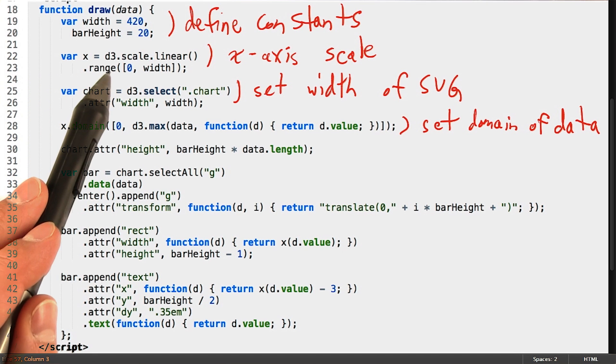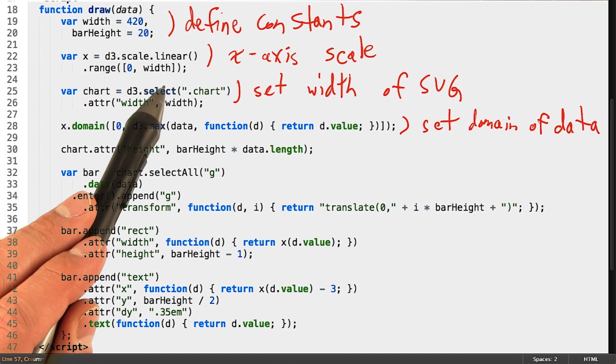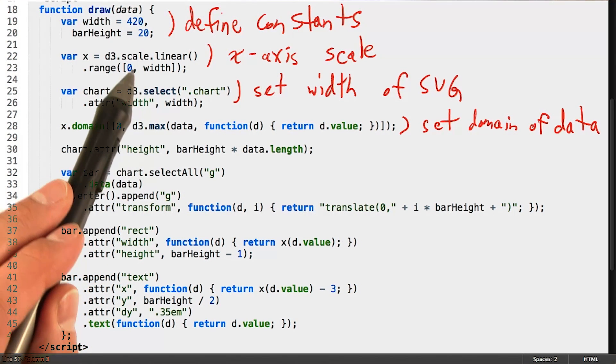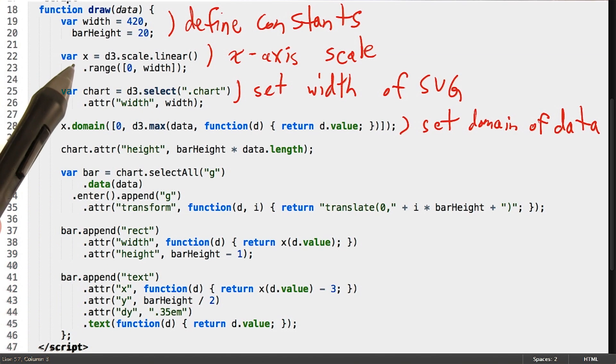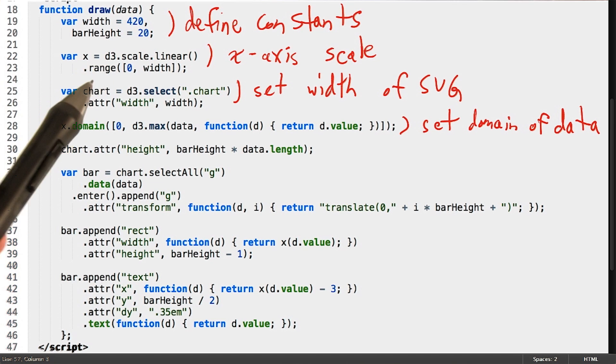Even though d3.scale.linear.range is a method call, it returns the scale object. So x is actually a scale and not a range. So this call here is actually calling domain on the scale of x.